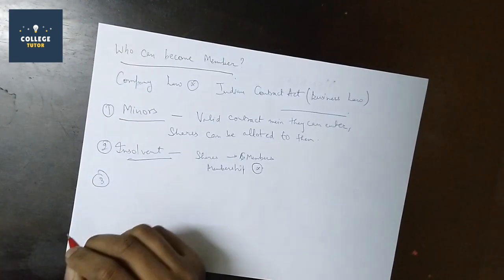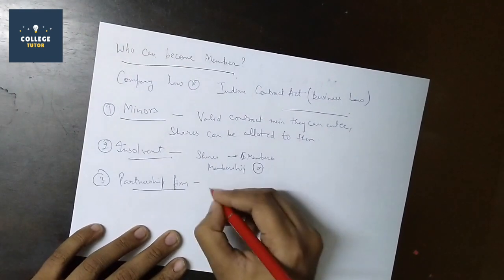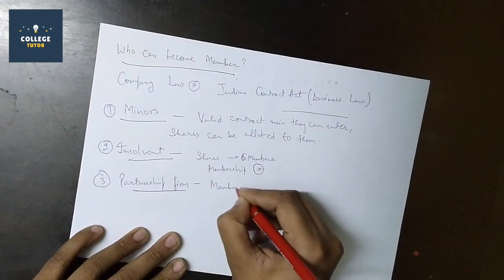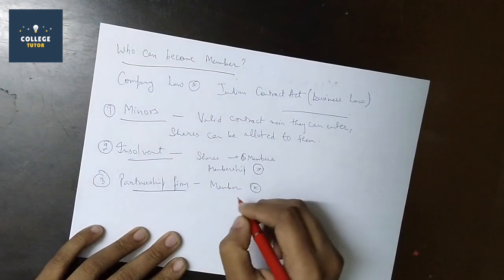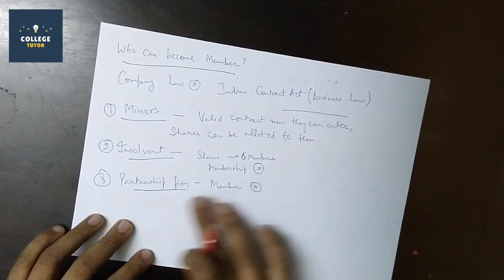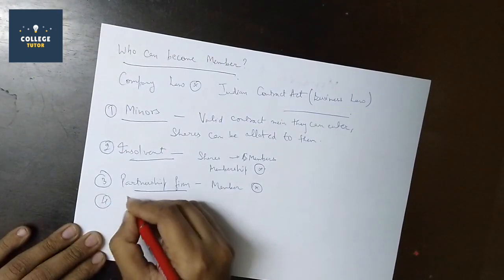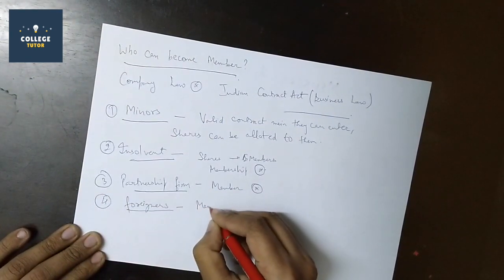Partnership firms - we have a partnership firm, but the partnership firm cannot become a member. Partners can be members at individual level, but the partnership firm itself cannot become a member.